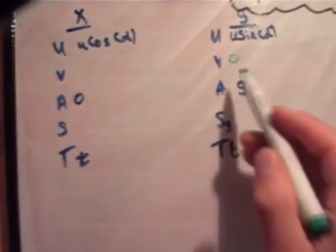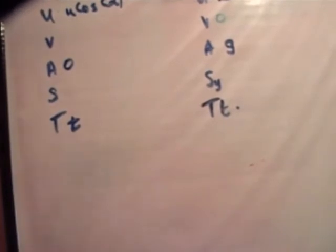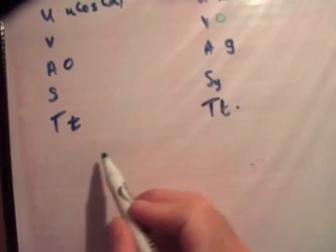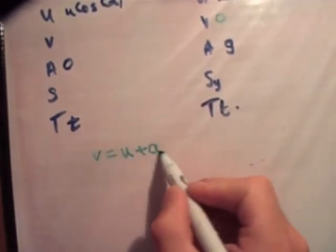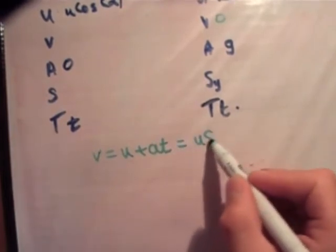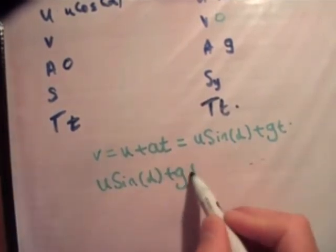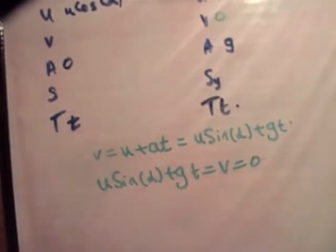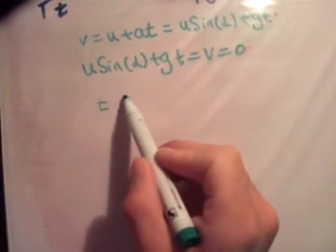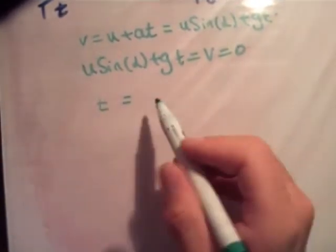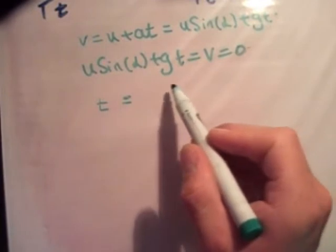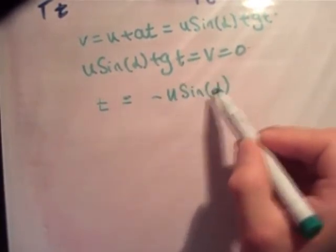So the next thing you're going to do is get an expression for v in order to get our t. Remember, of course, that v is equal to u plus at. So v is equal to u plus at is equal to u sine alpha plus gt. So u sine alpha plus gt is equal to v is equal to zero. So the next thing we're just going to do is arrange for t. So we know that t is equal to minus u sine alpha over g.